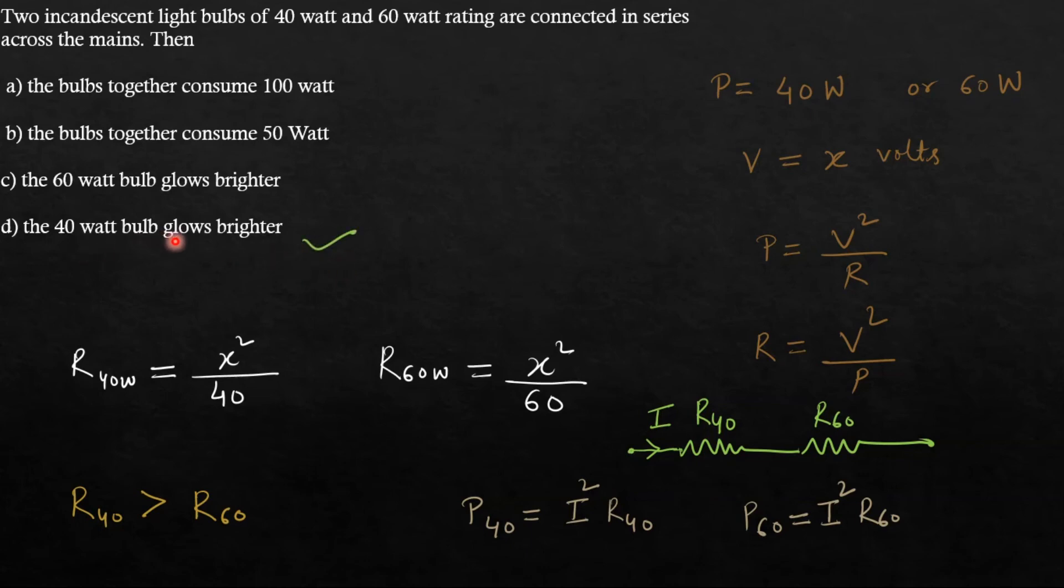40 Watt bulb will glow brighter. And generally this happens when we switch to the inverter, whenever light goes off and the inverter is functioning, the intensity of the device drops down, because the voltage supply is not actually the same as the mains voltage, it is bit lesser than that. So the device starts consuming less power, and when they consume less power, then their intensity also goes down. That is fan speed will go down, intensity of glowing bulb will also go down.